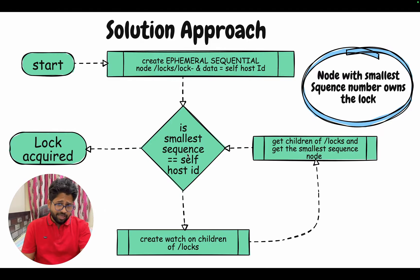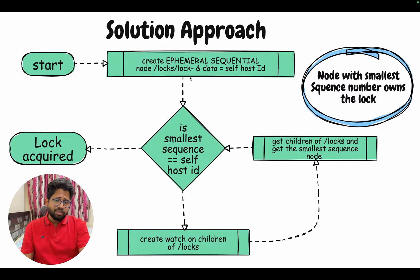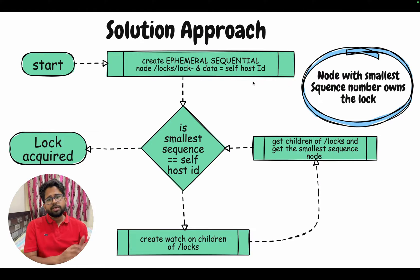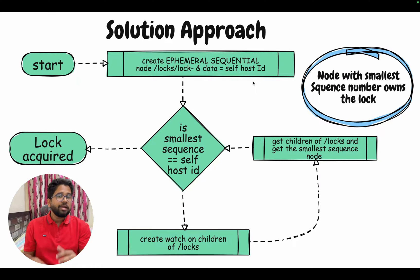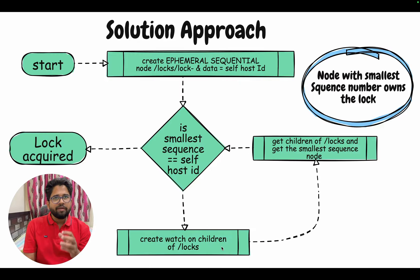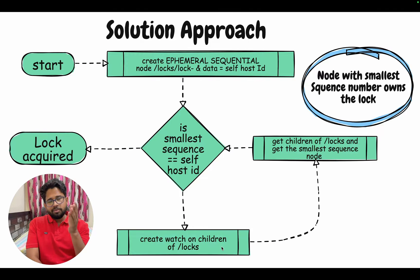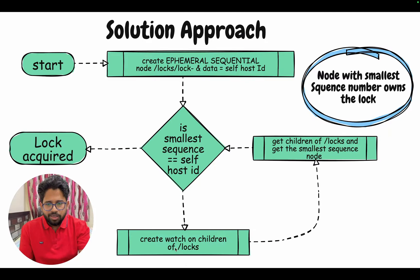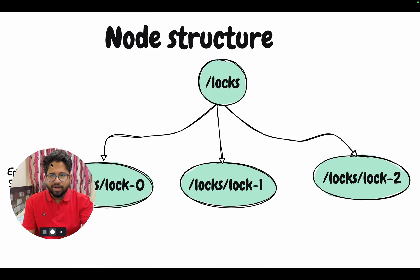Each server checks: among all the children under the particular root node, am I the smallest one? If I'm the smallest one, I acquire the lock. If I'm not the smallest one, I watch and wait for the previous node to be deleted so that I can acquire the lock.